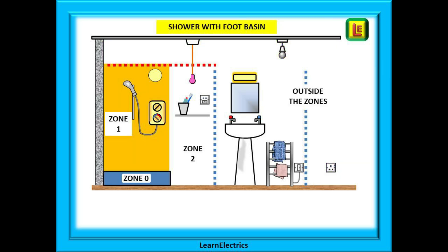Let's look at rooms with showers. These are essentially the same as bathrooms, with zones and outside zone areas. Zone 0 is the space inside the footbasin. Zone 1 is the space above the footbasin to a height of 2.25 metres from the floor, with a width equal to the outside edge of the footbasin. Zone 2 is 0.6 metres from the outside edge of the footbasin, and then we have the outside zone areas as before.